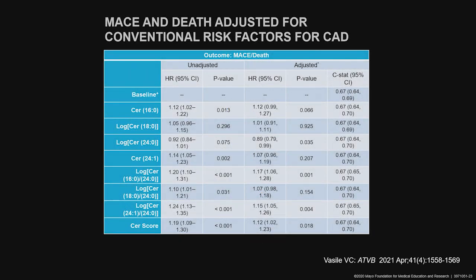We also wanted to see how good of a test the ceramide score was. After adjustment for conventional risk factors for coronary artery disease, we obtained a C-statistic of 0.67. While this may not seem very impressive, given that coronary artery disease is such a multifactorial condition, this C-statistic becomes significant. Moreover, when you compare this C-statistic with the C-statistic for the ASCVD risk calculator, which is less than 0.5, clearly the ceramide score has more discriminatory value than the ASCVD risk calculator for atherosclerotic events.